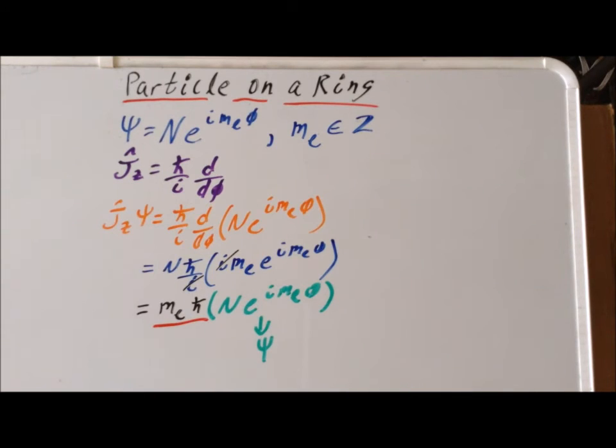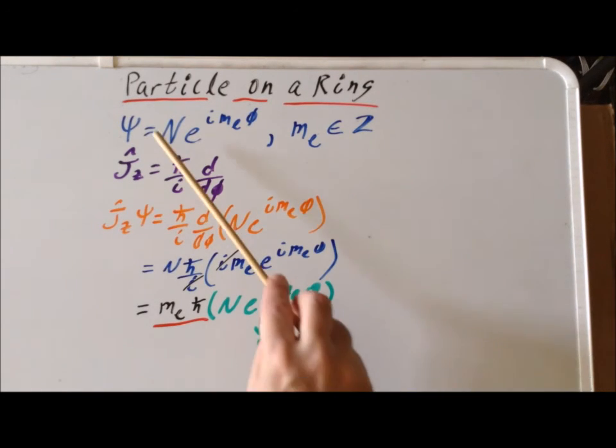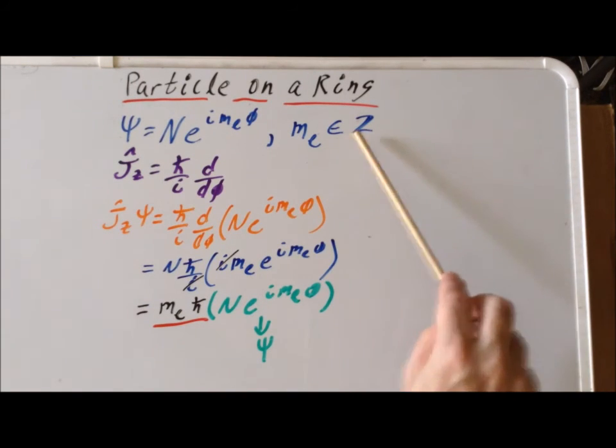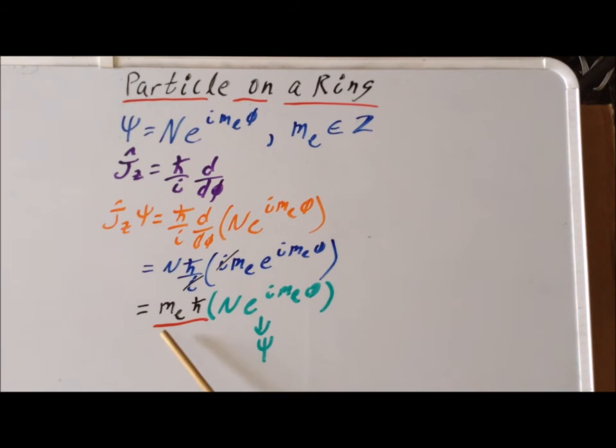is our angular momentum. So it shows that the angular momentum for a particle on a ring wave function, n times e to the i m sub l phi, where m sub l is an integer, is going to be simply m sub l h-bar.